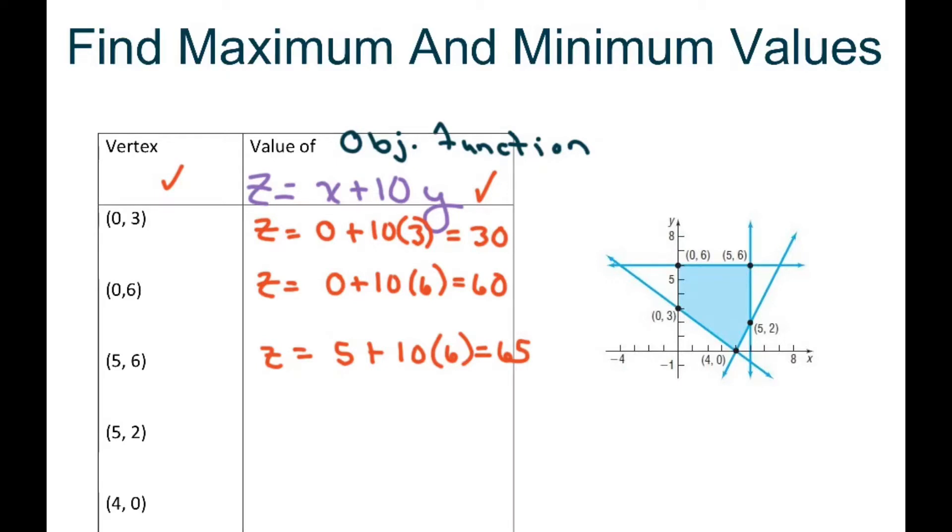Then I have z equals 5 plus 10 times 2 which equals 25. And finally I have z equals 4 plus 10 times 0 equals 4.